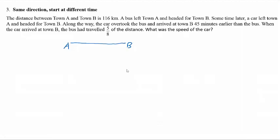This is the 3rd question for the top 5 common questions for PSLE speed. In this 3rd scenario, we have 2 objects traveling in the same direction but they start at a different time.